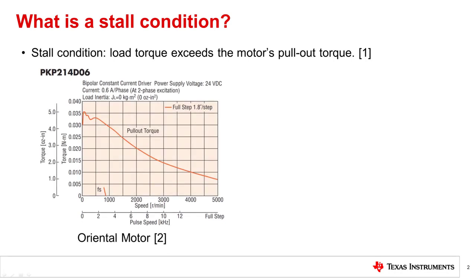Motor manufacturers will provide torque or pullout curves similar to the one shown here. This curve shows the motor's pullout torque for a range of speeds, and the pullout curve profile will be different from motor to motor. Designers use this curve to ensure that the motor's torque capability can meet the mechanical torque requirement of the system. The pullout torque decreases as the speed increases and is also proportional to the motor current, so the pullout torque curve will be specified for a particular motor current.